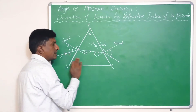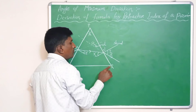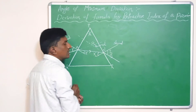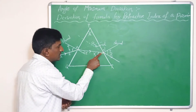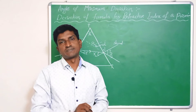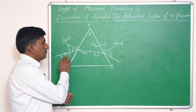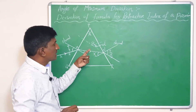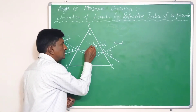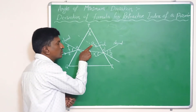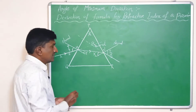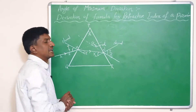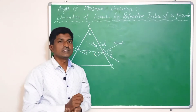This light ray emerges from PR at point N, where this is the normal line. MN is the path of the light ray inside the prism. If we extend the incident light ray and the emergent light ray until the point where they meet, these two extended rays intersect at a point, and the angle between the incident light ray and emergent light ray is the angle of deviation.